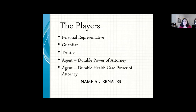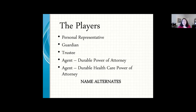When thinking about all the people you need to name in your estate planning, they all have different names but can sometimes be the same person. The person who carries out your will used to be called the executor — or executrix for women — but is now called the personal representative. If you have minor children, you may need to name a guardian. If you have a trust, you need a trustee. People named under your powers of attorney for healthcare and financial purposes are called your agents.